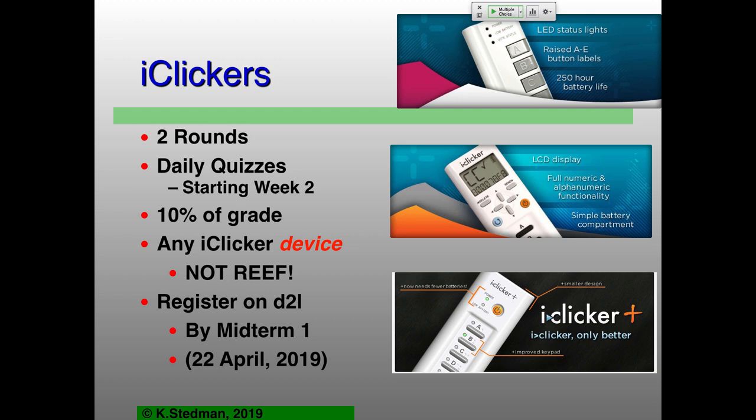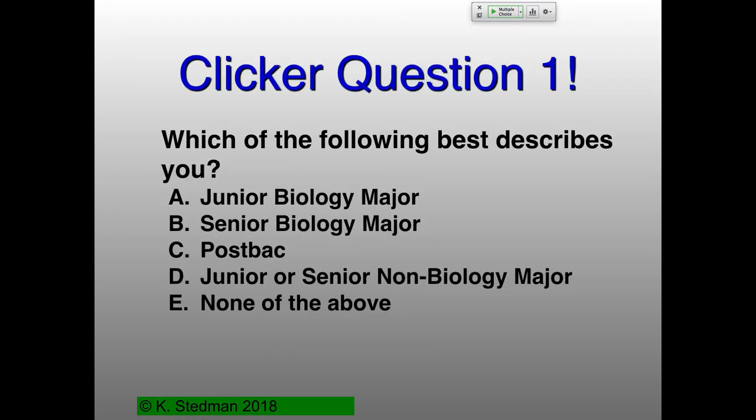Register on D2L. This should actually work now, as opposed to last term where I didn't manage to get it together. Register your clicker number on D2L by the midterm. So how many of you have clickers with you today? Can we do a quick survey, which again will not count. Which of the following best describes you? You're a junior biology major, a senior biology major, post-bac, junior or senior non-biology major, or none of the above.